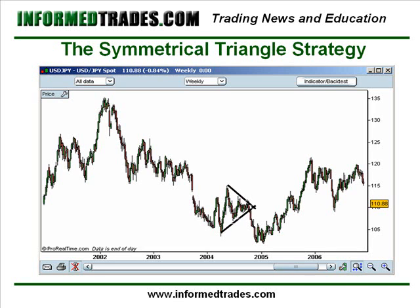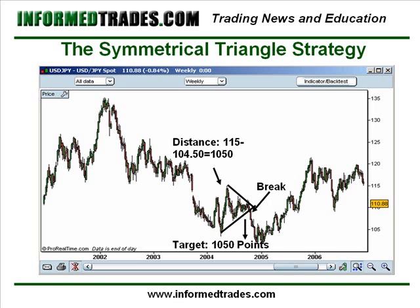We've got our symmetrical triangle here from last lesson, and in this instance it's broken to the downside. So traders are going to look to get short there commonly. The target is measured in the same way as with the other two triangles by getting the distance at the start — in this case it's 1,050 — projected downward, and that's our target for the trade. The stop, because it's broken to the downside, is placed just above the most recent peak.